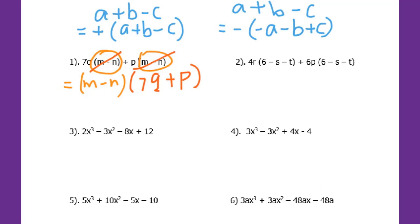Now let's go to number three. I have four terms, so I need to do grouping first. I will get parentheses 2x³ minus 3x². I put parentheses, then minus. I take the negative sign outside because this is minus and this one is minus. So I will get 8x minus 12.